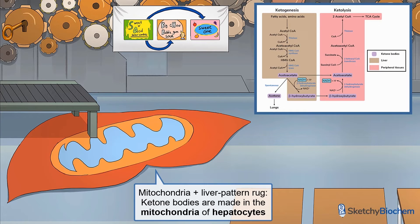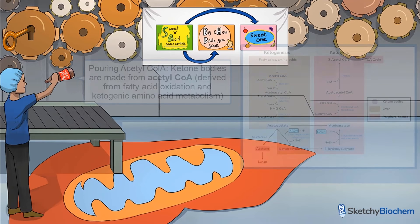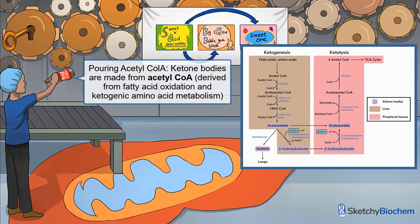Here's a diagram showing how the ketone bodies are made and broken down. Starting with ketogenesis: hormone-sensitive lipase first hydrolyzes triglycerides to glycerol and free fatty acids inside adipose tissues. Then free fatty acids undergo beta-oxidation to generate acetyl-CoA, which goes to the liver to make ketone bodies. Besides fatty acids, ketogenic amino acids also produce acetyl-CoA and can be used to make ketone bodies — and that's why they're called ketogenic.